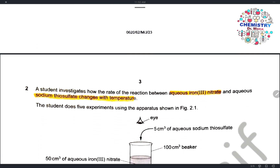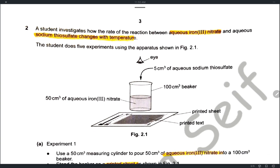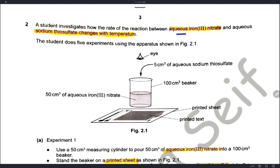Question two: a student investigates how the rate of reaction between aqueous iron(III) nitrate and aqueous sodium thiosulfate changes with temperature. We will study the effect of temperature on the reaction. The student does five experiments using a beaker placed on a printed sheet, adding aqueous iron(III) nitrate to the beaker, then looking through from the top to record when the text becomes visible.